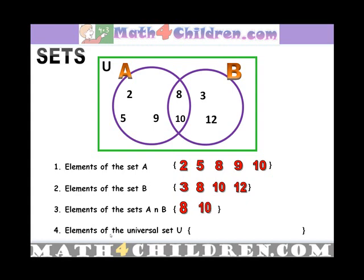What are elements of the universal set? 2, 3, 5, 8, 9, 10, 12.